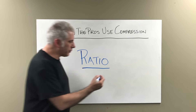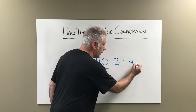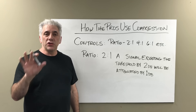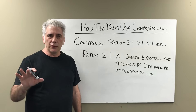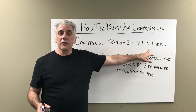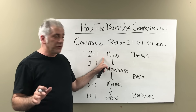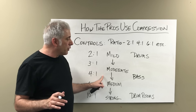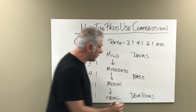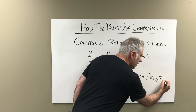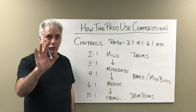The first thing we're going to talk about is ratio. On your compressor when you see things like 2:1 or 4:1, that is your ratio. A 2:1 ratio means once the signal coming into the compressor exceeds the threshold by 2 dB, it'll be attenuated by 1 dB. If the threshold was exceeded by 8 dB, it'd be turned down by 4 dB. Typically, 2:1 is mild compression, 3:1 to 4:1 is more moderate, and 4:1 is typically what mixers use on the mix bus.